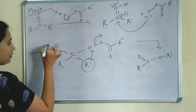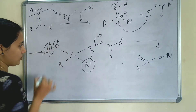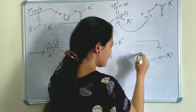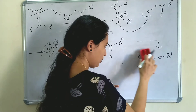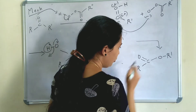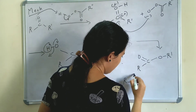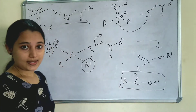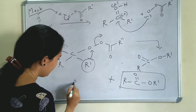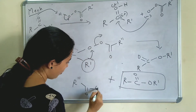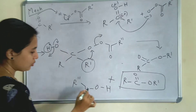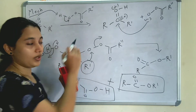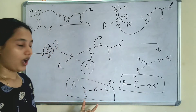The H⁺ is eliminated, drawing electrons toward oxygen, so oxygen gets a negative charge, and that negative charge is shifted to give C double bond O. So the product is R-C double bond O-O-R' — this is an ester. And the remaining product is R''-C double bond O-O-H — this is an acid. So in Baeyer-Villiger Oxidation, oxidation of a ketone using peracid gives an ester and a carboxylic acid.